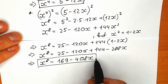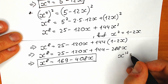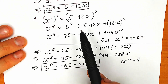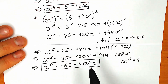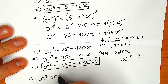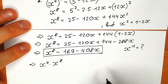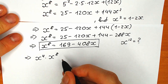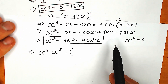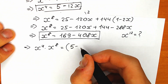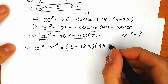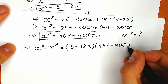This is not yet the expression we need because we need x to the power 12. How can we combine all this to find x to the power 12? In the beginning we had x to the fourth power equal to 5 minus 12x. When we multiply x to the power 4 by x to the power 8, we get x to the power 12. So let's multiply x to the fourth times x to the eighth: (5 minus 12x) times (169 minus 408x).